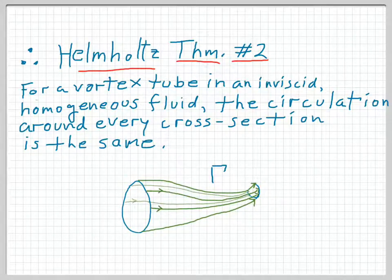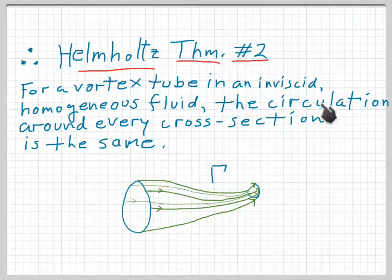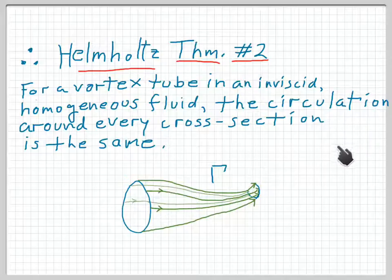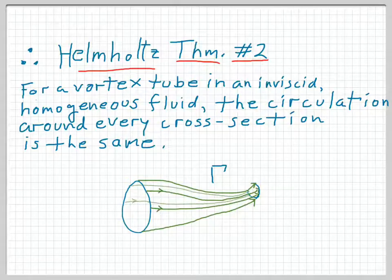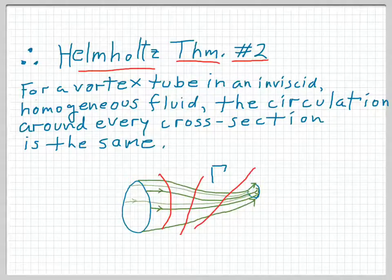Since the two cross sections alpha and beta were chosen arbitrarily, the circulation around any cross section is the same. This is Helmholtz's second theorem: for a vortex tube in an inviscid homogeneous fluid, the circulation around every cross section is the same — whether you take a cross section here, there, or anywhere along the tube.